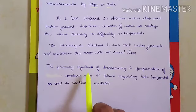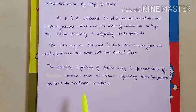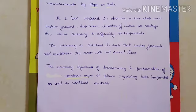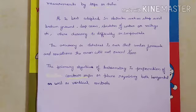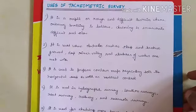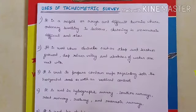The primary objective of tachymetry is the preparation of contour maps or plans requiring both horizontal as well as vertical controls. Next we will see the uses of tachymetry surveying.